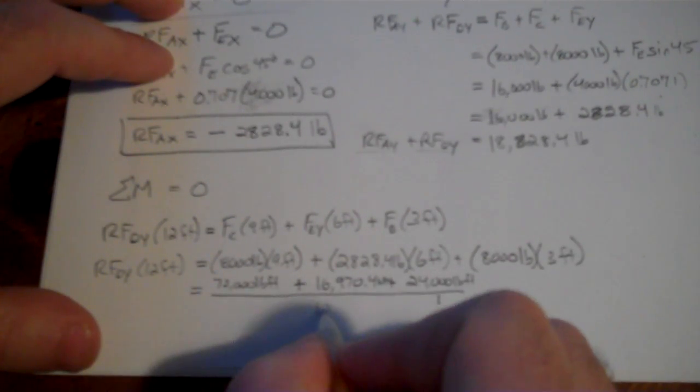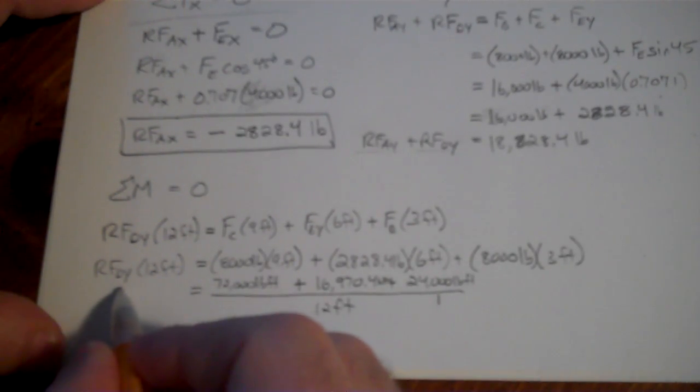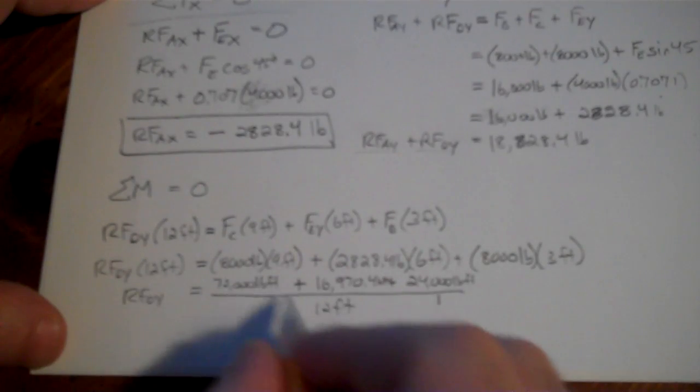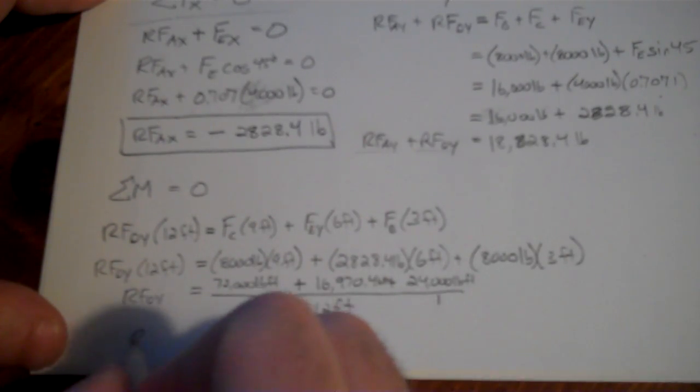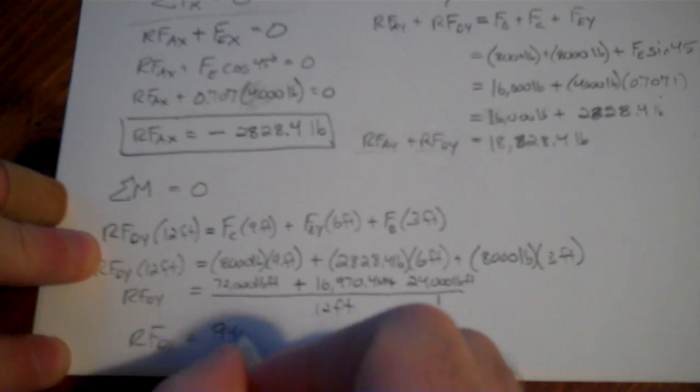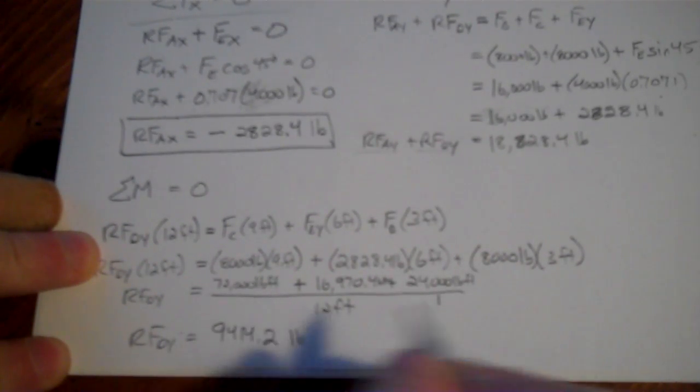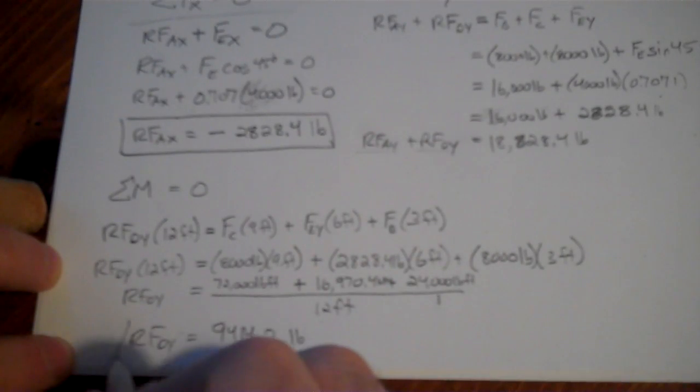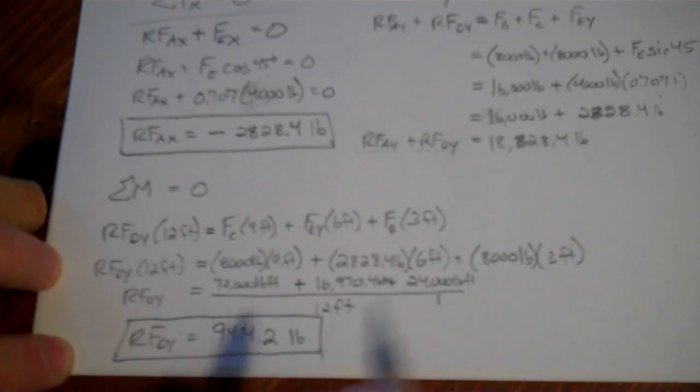Now, all of that is going to be divided by the 12 feet, because we want to isolate RFDy by itself. So RFDy is going to equal all of that, divided by 12. Presto, change-o. Let me crank through my calculator here. 24,000 plus 16,970.4, plus 72,000, gives me 112,970.4, divided by 12. 9414.2 pounds, because I divided by feet. So I have RFDy is 9414.2 pounds.